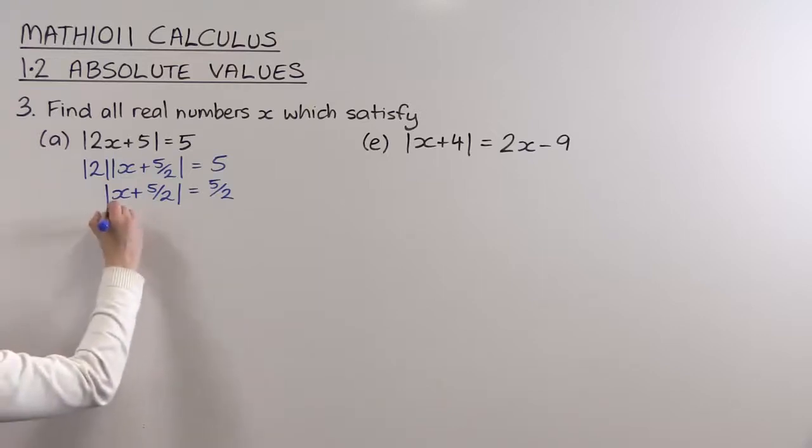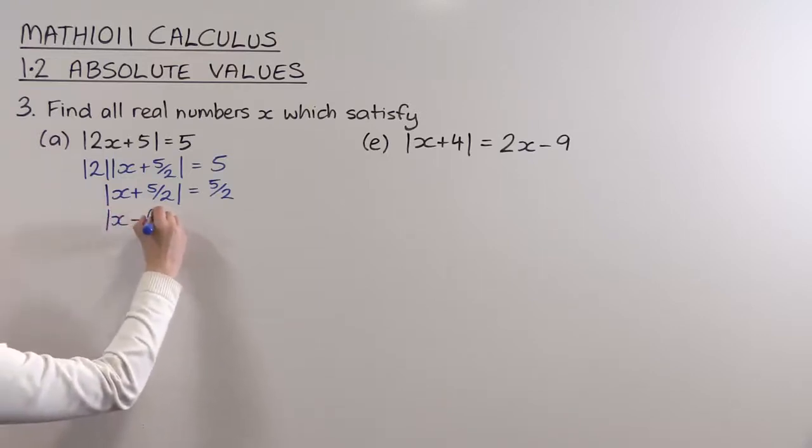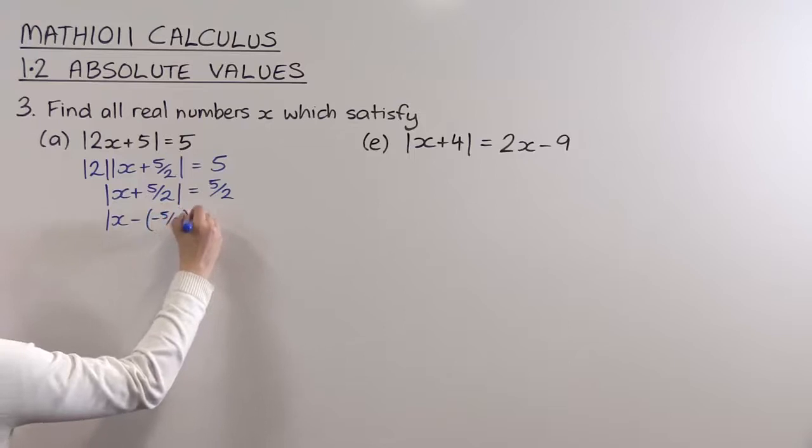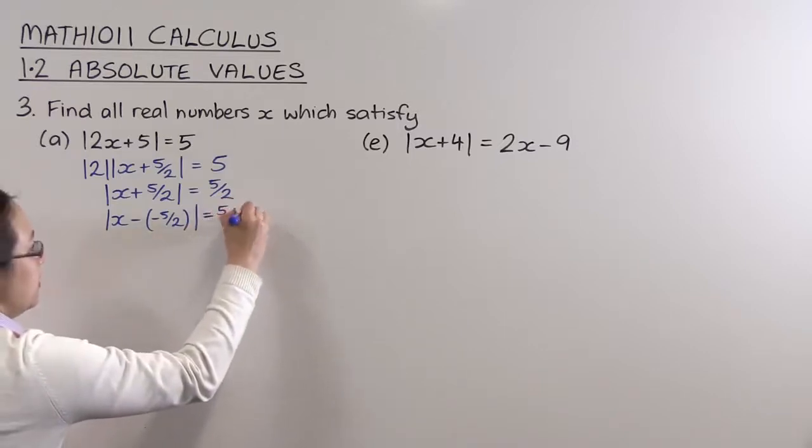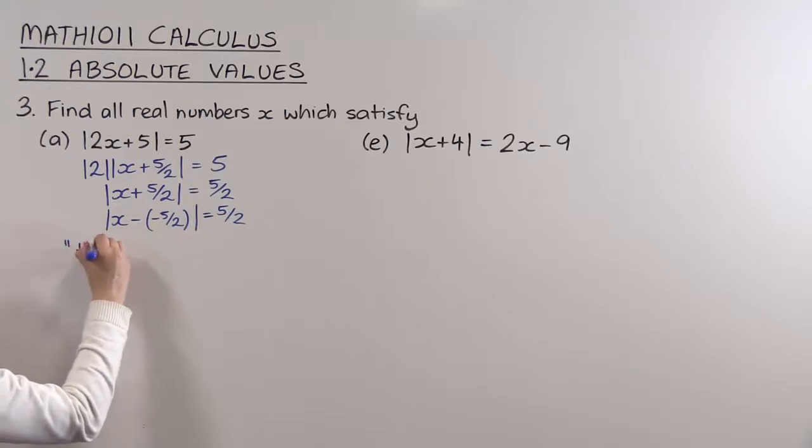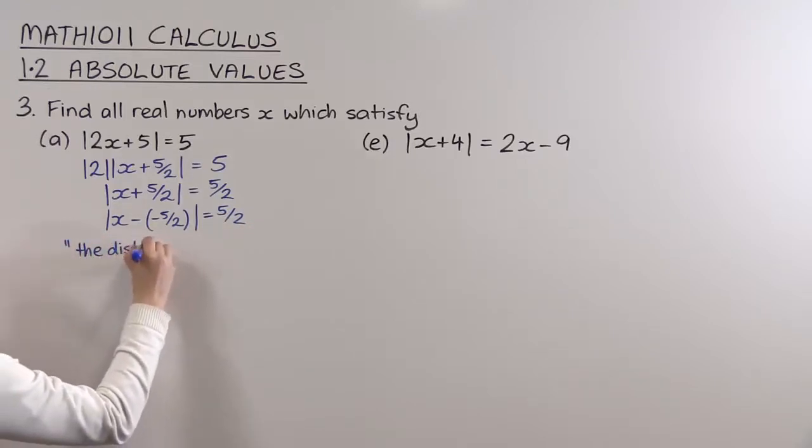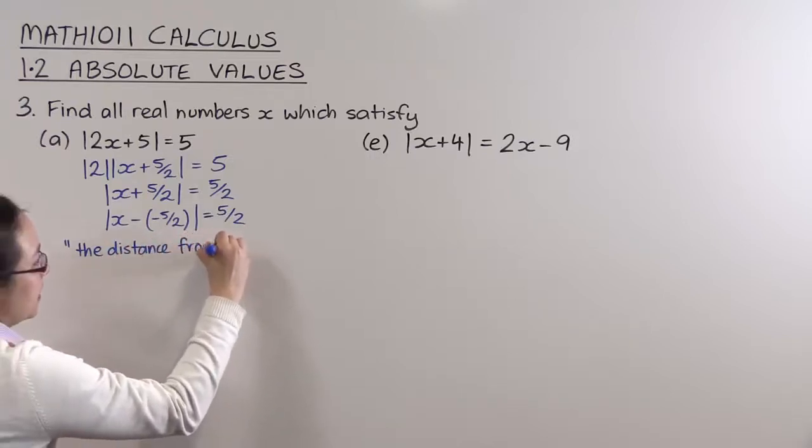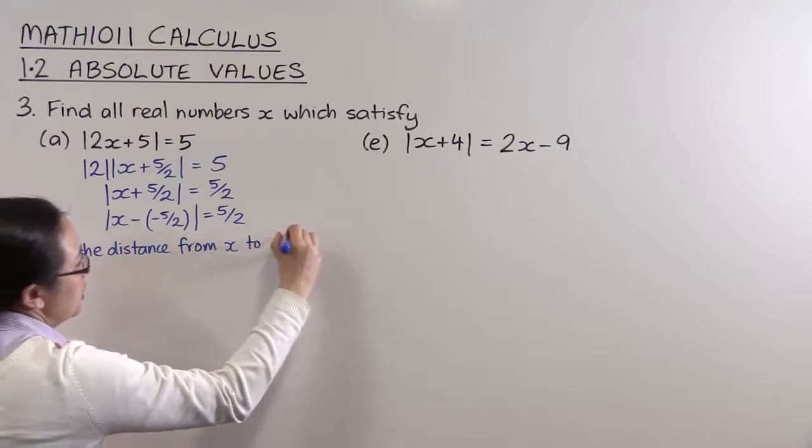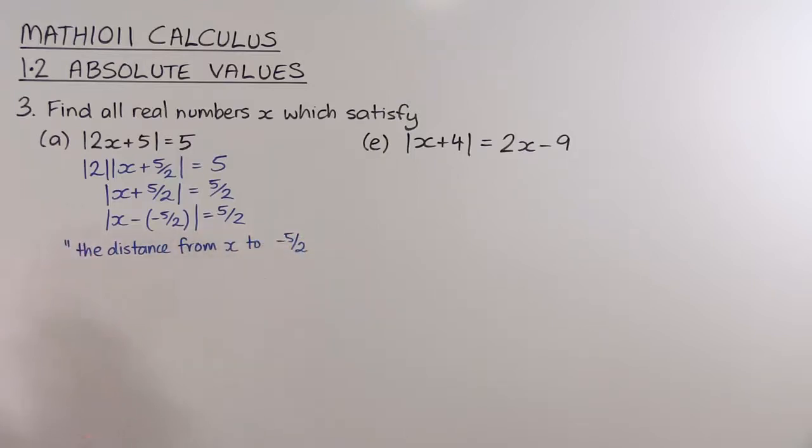Now I have to rewrite this as a minus if I want to think about this as a distance. So x plus 5/2 is the same as x minus minus 5/2.